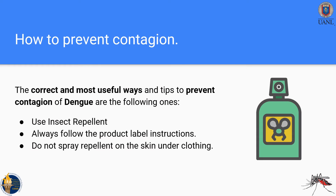To prevent contagion of dengue, the first tip is to use insect repellent. Insect repellent will repel any type of insect that could get near you or your family. Always follow the product label instructions, as there may be warnings or specific directions. Do not spray repellent on the skin directly — put it over clothing, because insects will be better repelled when it is on the clothes.